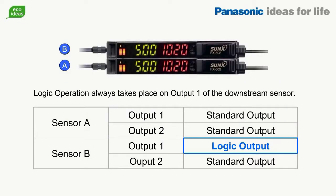Once configured, the logic output always takes place on output one of the downstream sensor. All other outputs, including output two of the downstream sensor, will remain in their standard configuration.